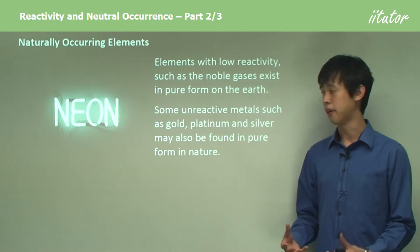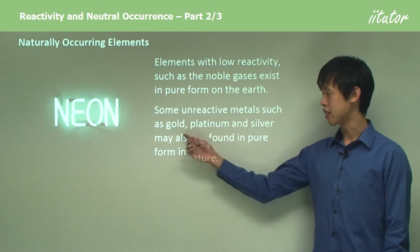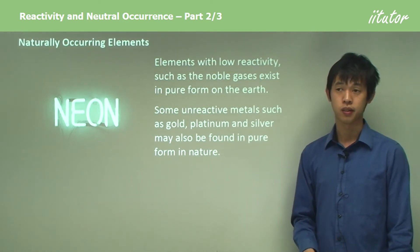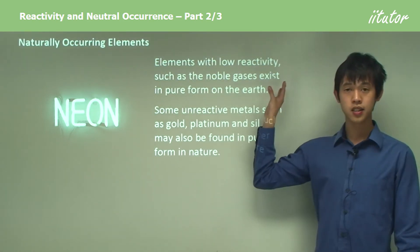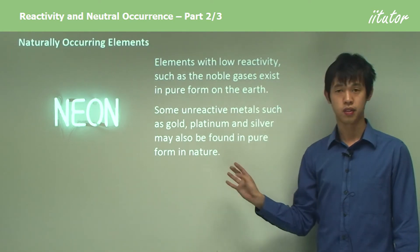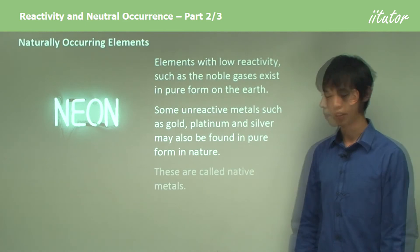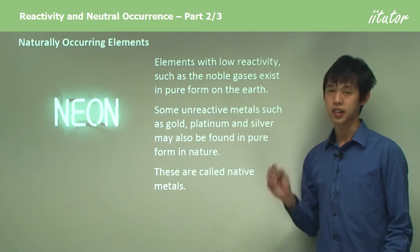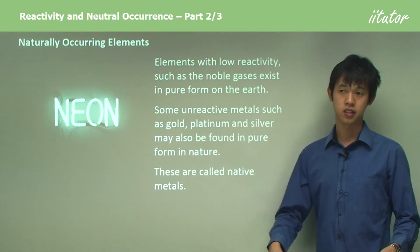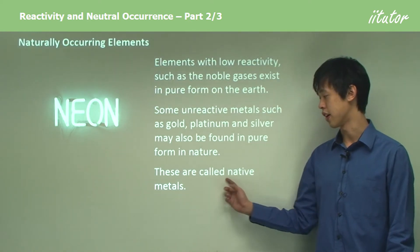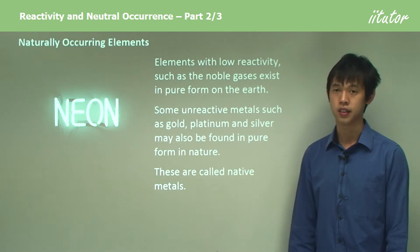We can find these three metals, and these are the only three metals that we find in pure form in nature. So we have the noble gases and also these unreactive metals. These unreactive metals are sometimes called native metals because they don't bond with anything—they're just by themselves in the ground.